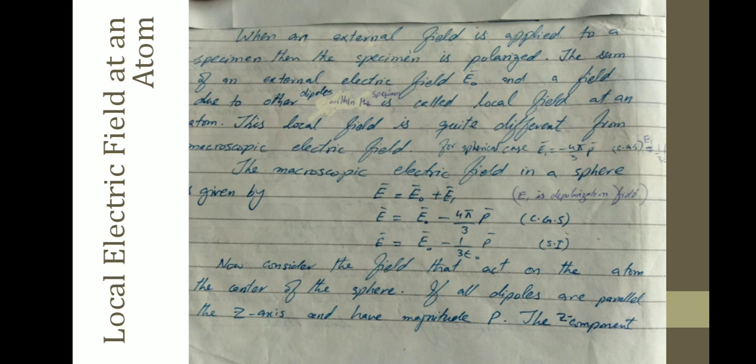First, the local electric field at an atom. When an external field is applied to a specimen, the specimen is polarized. The sum of the external electric field E-naught and a field due to other dipoles within the specimen is called the local field at an atom. This local field is quite different from the macroscopic electric field. The macroscopic electric field E is equal to E-naught plus E1, where E-naught is the external electric field and E1 is the depolarization field. We know that E1 equals minus 4π/3 · P, so E equals E-naught minus 4π/3 · P in the CGS system.